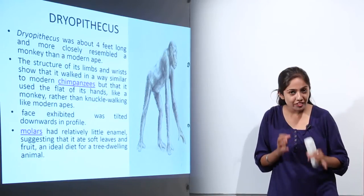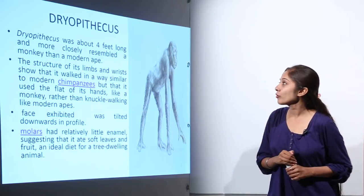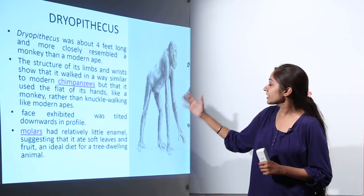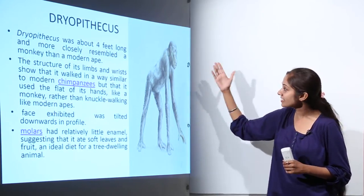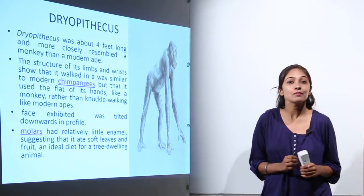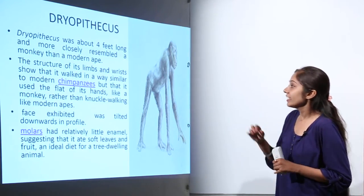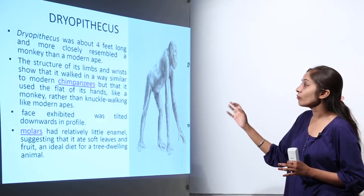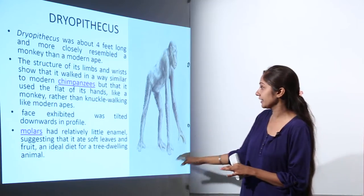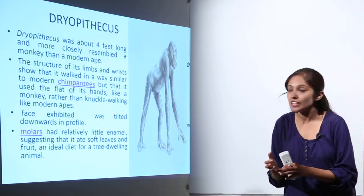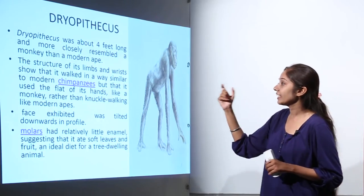Let us now discuss some of the features of Dryopithecus. Dryopithecus was about 4 feet long, and as you can see in the image, it more closely resembles a monkey than a modern ape. The structure of its limbs and wrists shows that it walked in a way similar to modern chimpanzees, but it used the flat of its hands like a monkey, rather than knuckle walking like modern apes.